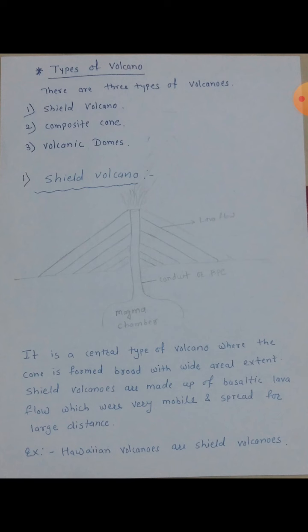Tela maanaj cha shield volcanoes. It is a central type of volcano where the cone is formed broad with wide aerial extent. Shield volcanoes are made up of basaltic lava flow which are very mobile and spread for a larger distance. Hawaiian volcanoes are shield volcanoes — haechamadhe example di lela hai.